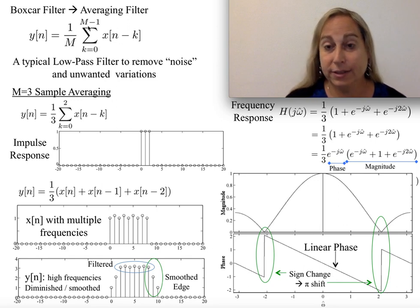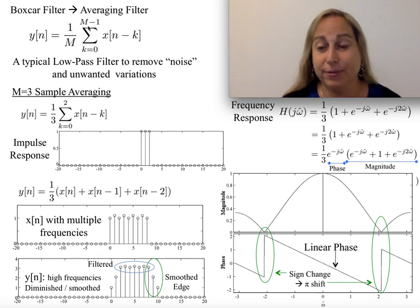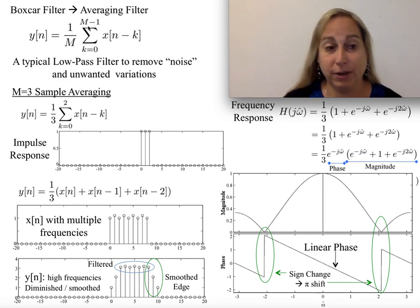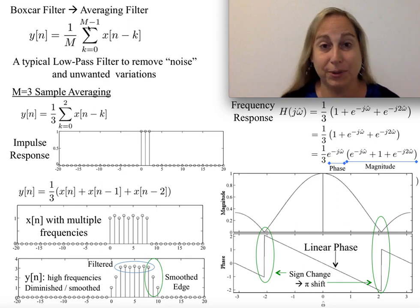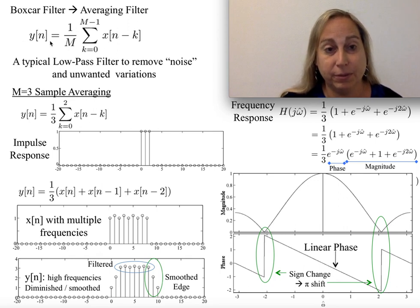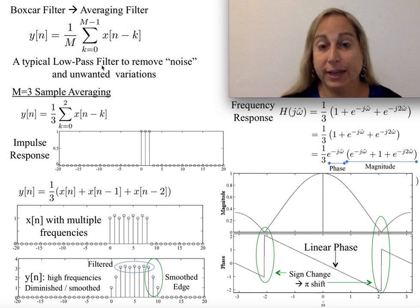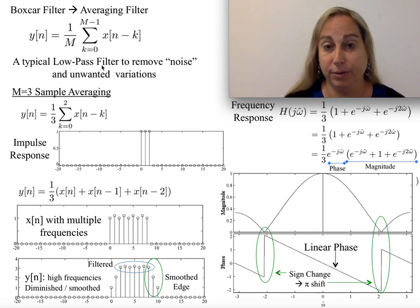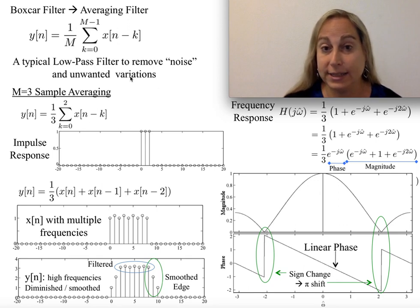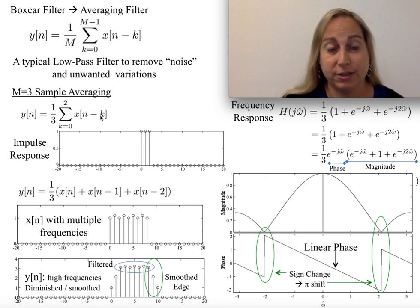Averaging tends to reduce variation — this is why we average things, like exam scores, to figure out what the overall right number looks like. So the question is: what does this physically start to look like? This formulation is always going to be a low-pass filter, meaning you're going to amplify or at least preserve signals that are lower frequency, while higher frequency signals you're going to try to remove.